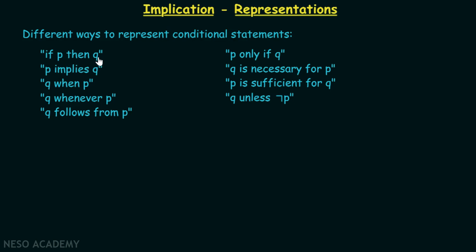If p then q — the meaning is quite simple. When p is true, then q has to be true. It is not the case that when p is true, q can be false, because in that case the conditional statement becomes false. Another way to represent a conditional statement is 'p implies q.' p implies q is equivalent to if p then q, and we are already aware of that fact.